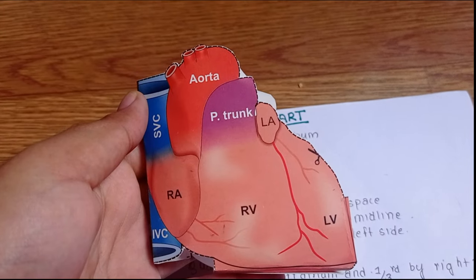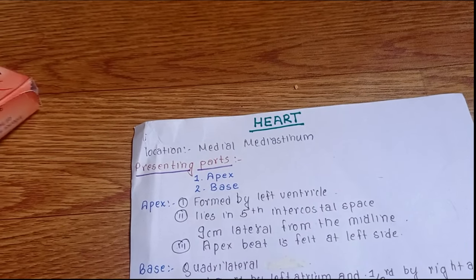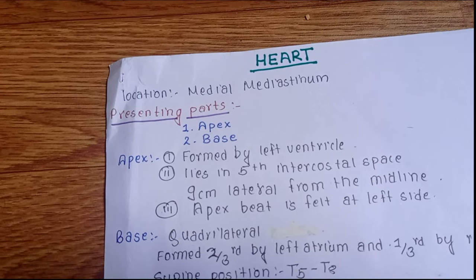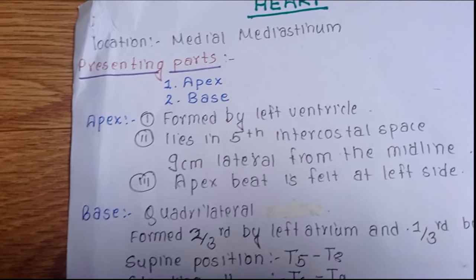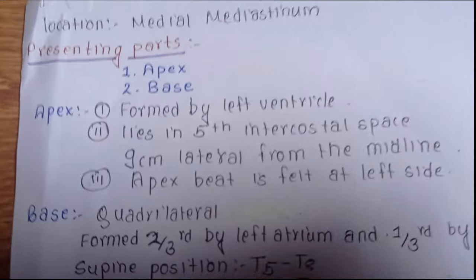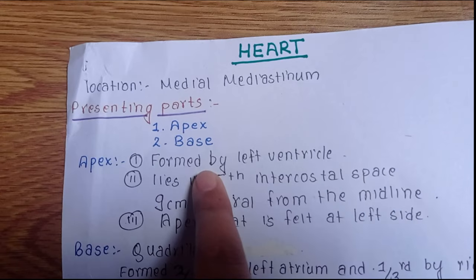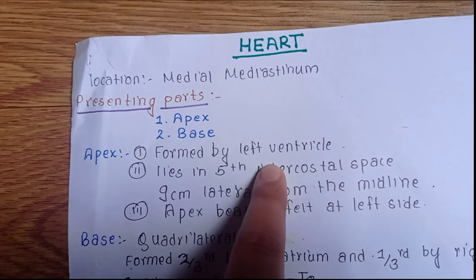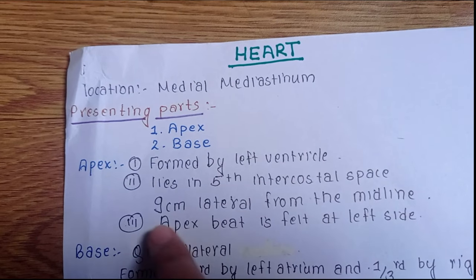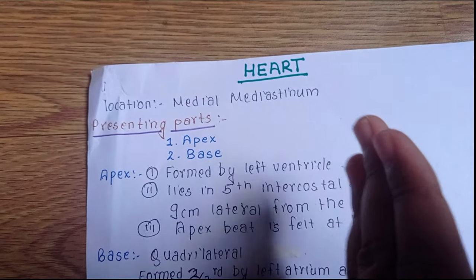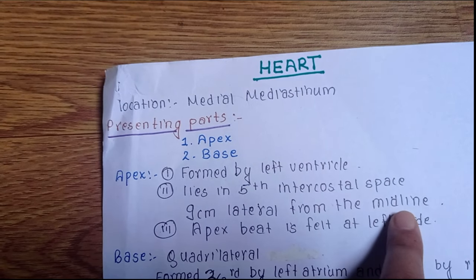Hello everyone, let's discuss the heart today. First, we have the presenting parts of the heart. Let's discuss the apex and base of the heart. Talking about the apex, it is formed by the left ventricle, and it lies in the fifth intercostal space, nine centimeters lateral from the midline of the thoracic cavity.